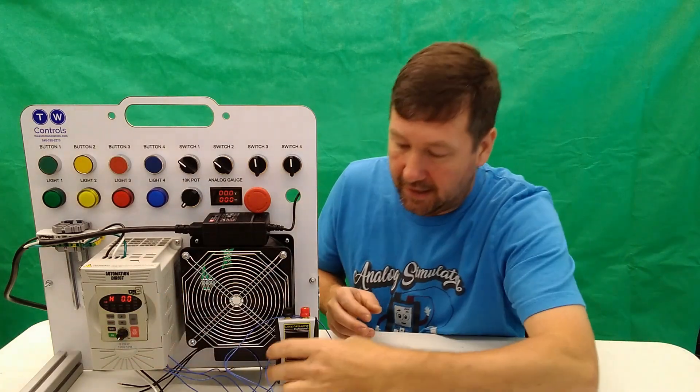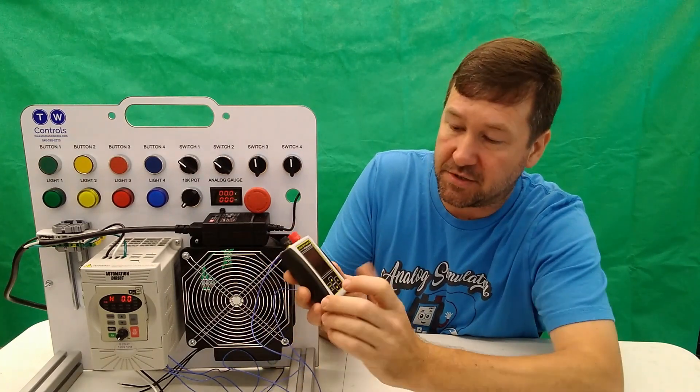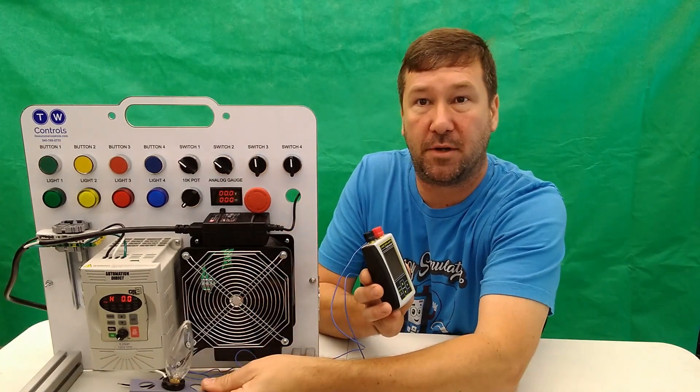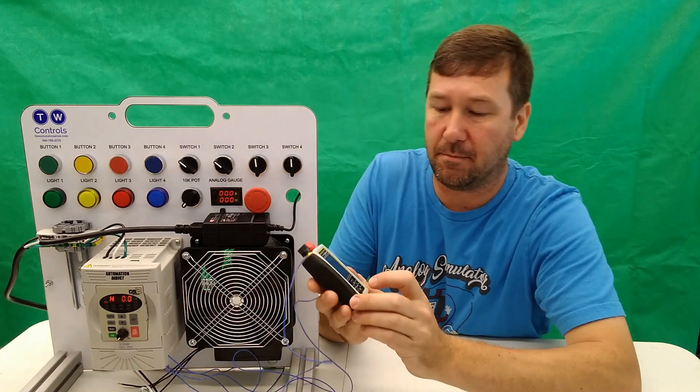For example, I have wired our analog simulator into this drive, and I've modified it a little bit. I've removed the motor and I put a light in place just as it's a little easier to see than to see the motor turning.